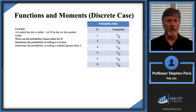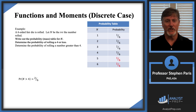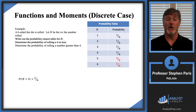Now let's look at the probability of rolling a number greater than four. Greater than four means cap N would be a five or a six. Highlighting those corresponding probabilities and adding them up gives the probability that cap N is greater than four, which reduces to one-third.